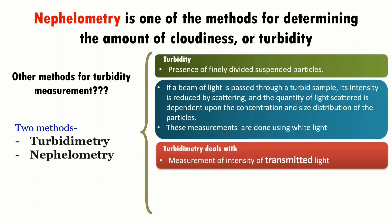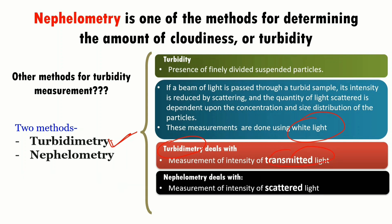These measurements are usually done using white light. Turbidimetry measures the intensity of transmitted light, whereas nephilometry measures the intensity of scattered light.